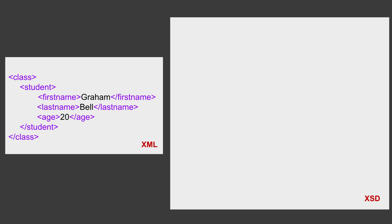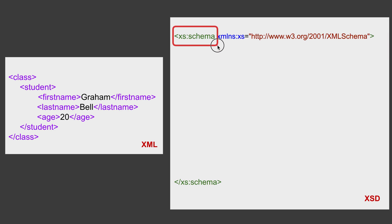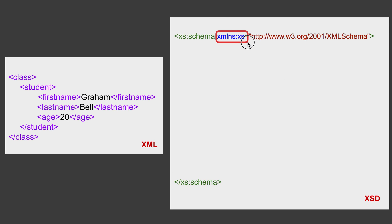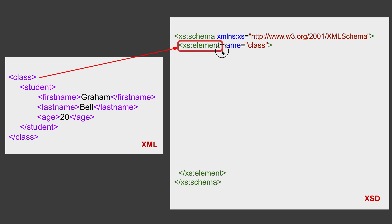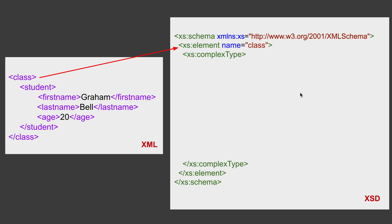So let us now create a XSD for this XML. To start with, we begin with the tag 'xs:schema' — here is the start tag and here is the end tag. We also give the 'xmlns:xs' attribute and generally give the W3.org URL here. This is the start of an XML schema. Then we can start describing our elements. The first element we have is 'class', so here I will say 'xs:element' — this is the start tag and here is the end tag — and then we give the name of the element, which is 'class'.